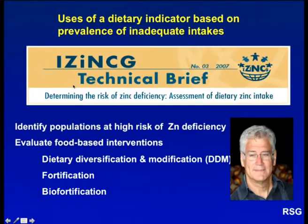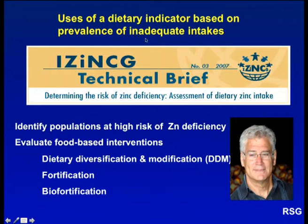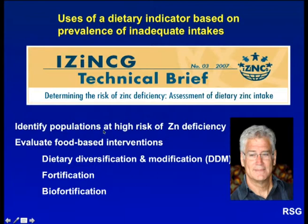WHO, IAEA, UNICEF and iZinc endorsed the use of a dietary indicator based on the prevalence of inadequate intakes of zinc to assess the risk of population zinc status. Ken Brown, the chair of iZinc, was responsible for implementing an iZinc technical brief published in 2007. This technical brief outlined the steps needed to assess the prevalence of inadequate intakes of zinc, and we can use this indicator to identify populations at high risk of zinc deficiency and also to evaluate food-based interventions, whether from dietary diversification and modification, fortification, or bio-fortification.